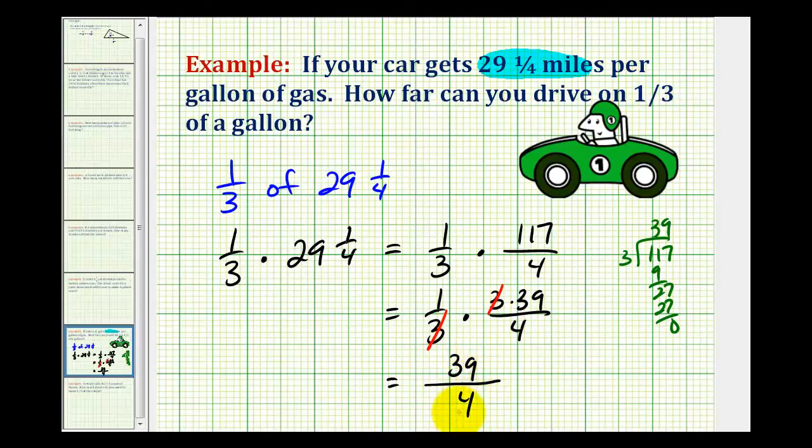So this represents the number of miles that we can drive on one-third of a gallon, but let's go ahead and convert this to a mixed number. So we'll take thirty-nine and divide by four. Well, there's nine fours in thirty-nine. Nine times four is thirty-six, remainder of three, so thirty-nine fourths equals nine and three-fourths.